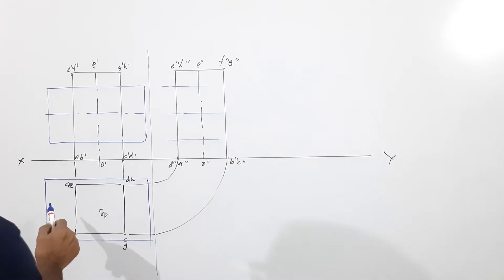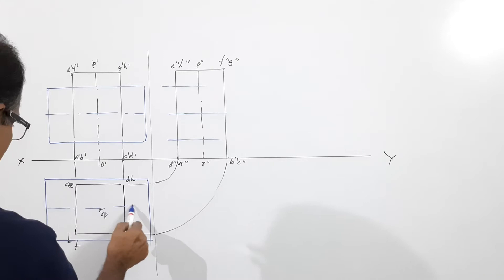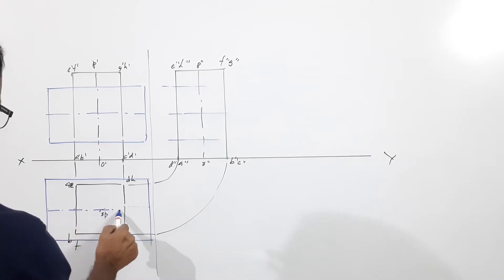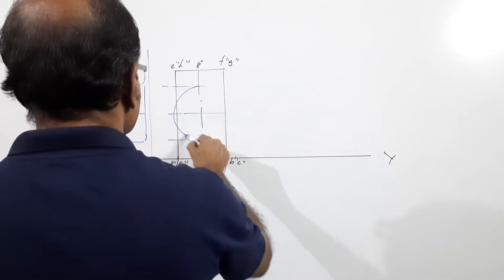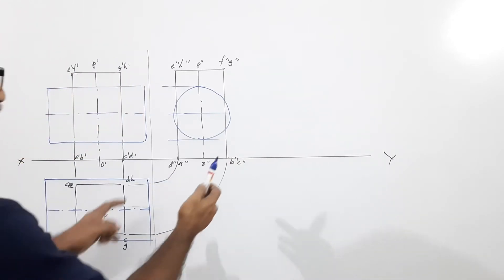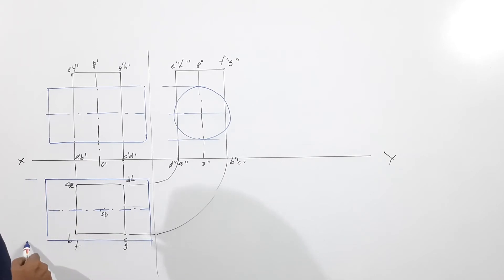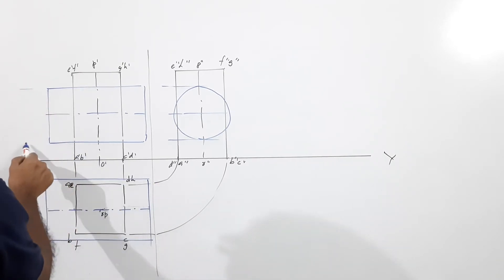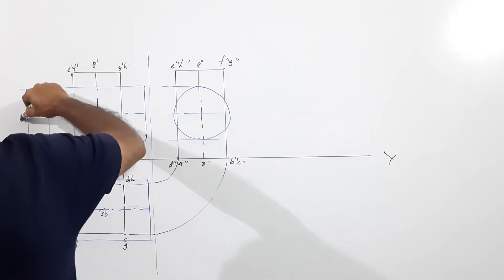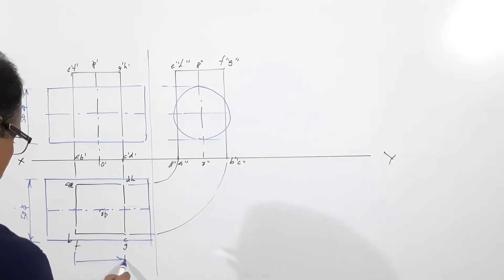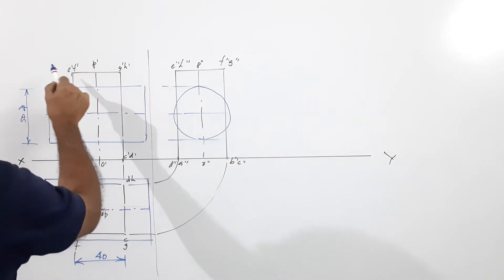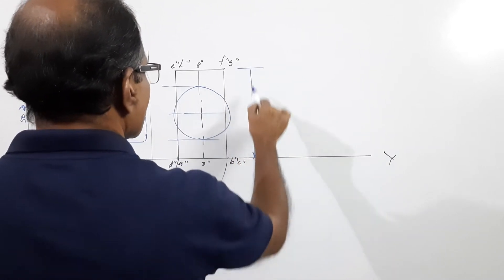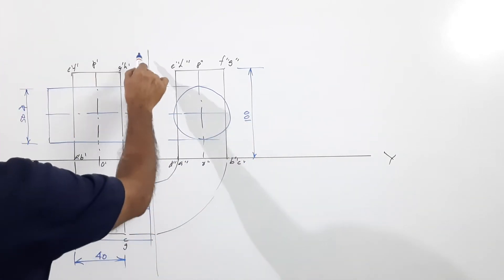The end view of this cylinder is a circle. The circle extends beyond the prism because the prism side is 40 mm and the cylinder diameter is 50 mm. I am marking the dimensions — 55 in both plan and elevation — with the axis length being 40 mm, diameter 50 mm.